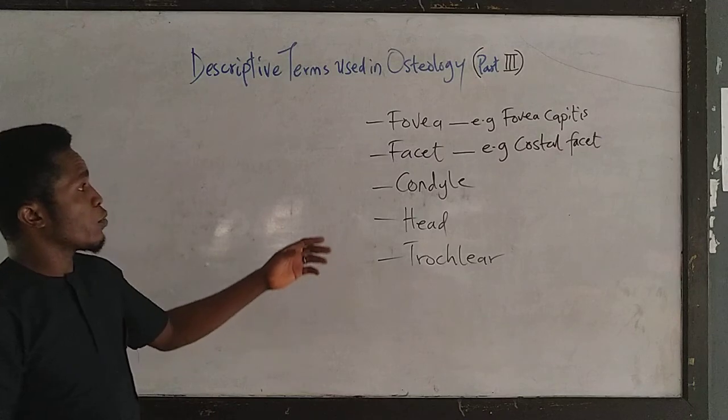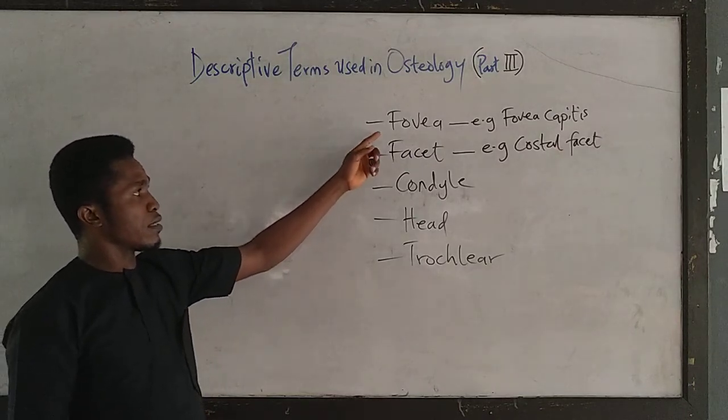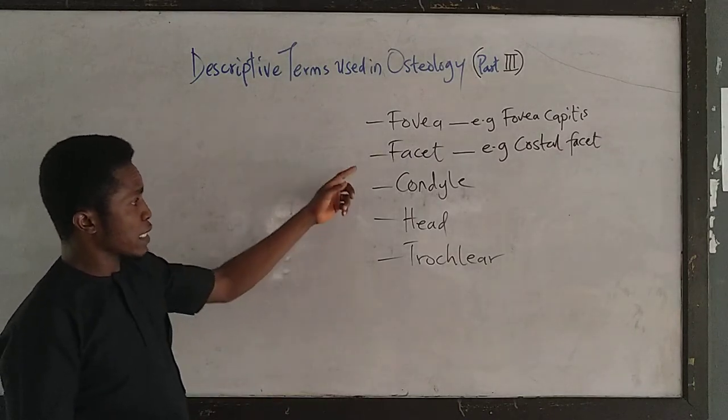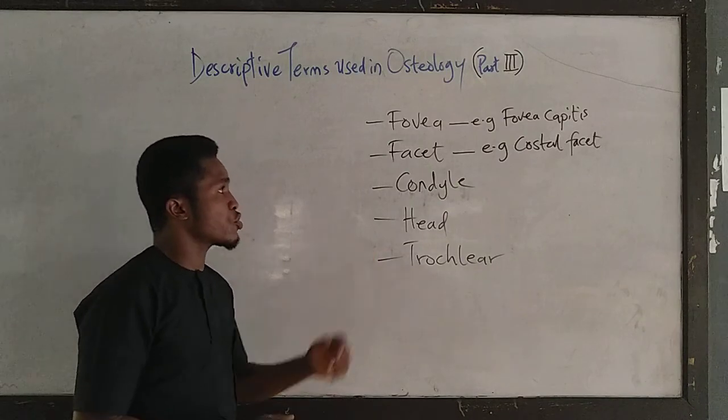We shall be looking at the following terms: the meaning of fovea, facet, condyle, head, and trochlea.